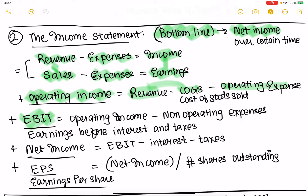EBIT is another good measure — earnings before interest and taxes. If you take operating income and remove non-operating expenses, you get EBIT. Net income is EBIT minus interest and taxes.